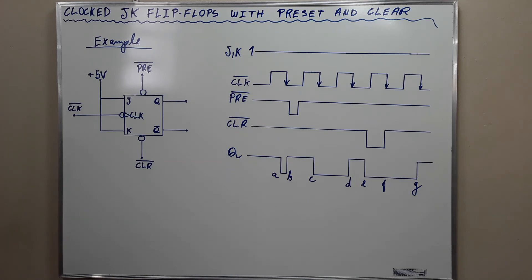At point B, the preset input is set to its active low state. This will immediately set the output to 1.